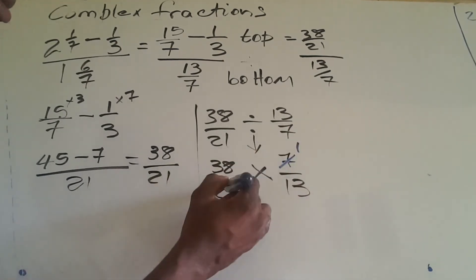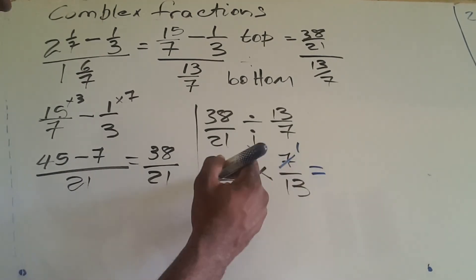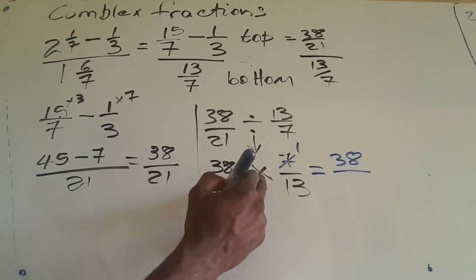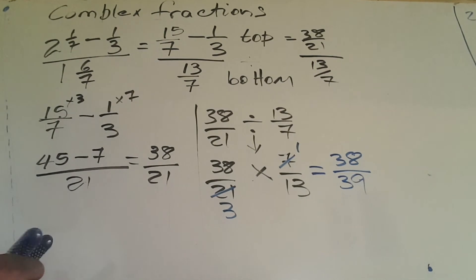7 goes into 21 three times. We don't have anything else to cancel. So 38 times 1 is 38, and 3 times 13 is 39. Our final answer is 38/39.